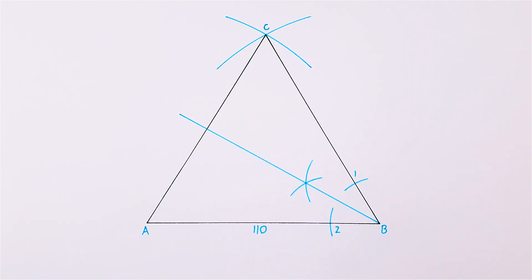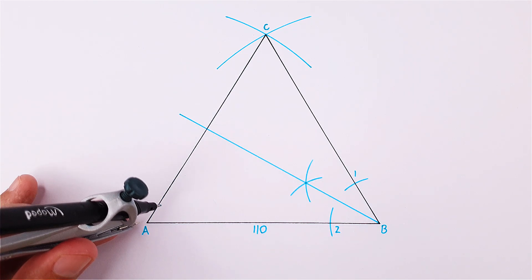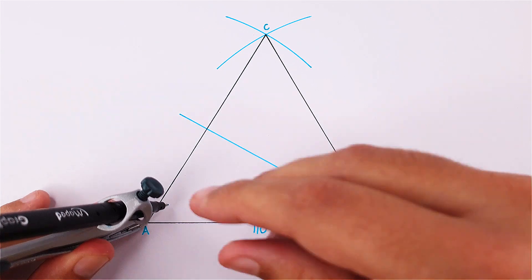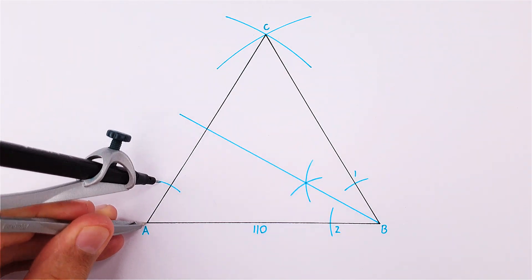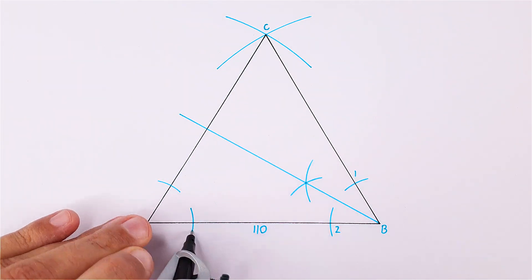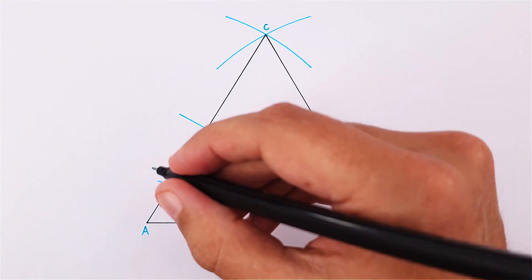Now repeat this process from angle A. Place your compass on point A, adjust it slightly and draw arcs to cut through AB and AC. Label the intersections as point 3 and 4.